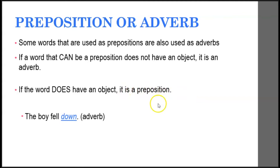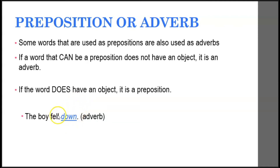For example, 'the boy fell down.' Down is in your preposition song, but it's often used as an adverb. Here, if I ask 'down what?' we can't answer the question — it doesn't have an object. So in a situation like this, down is an adverb modifying the verb 'fell,' telling us where he fell, or the manner in which he fell.